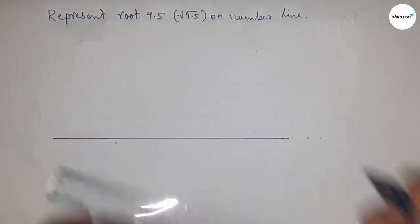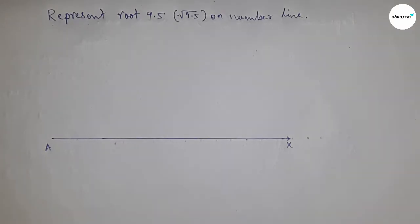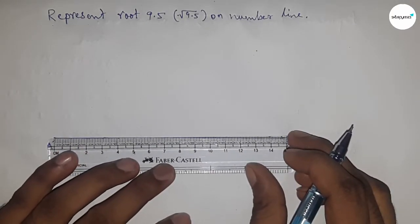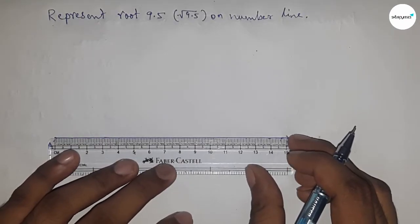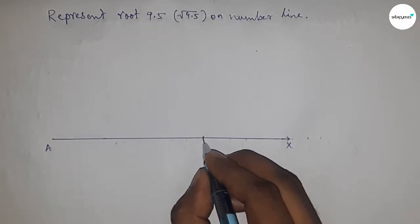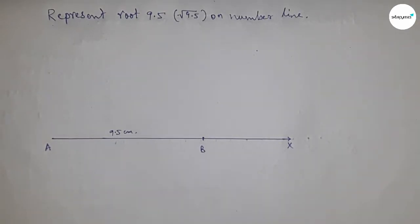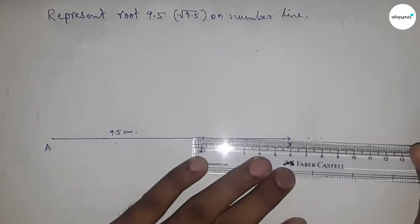This is the x-axis line. Next, take 9.5 centimeters using a scale and mark this as point B. So AB equals 9.5 centimeters.